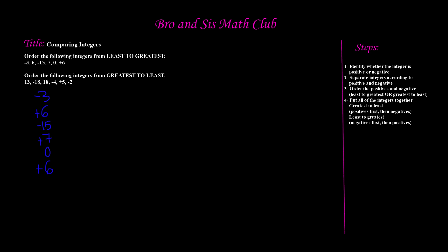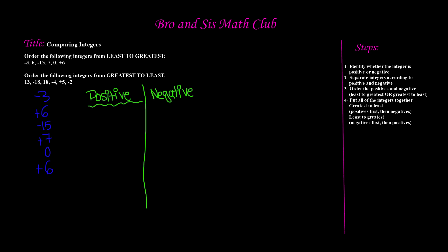Step 2 says: separate the integers according to positive and negative. So we're going to make a chart with positive numbers on one side and negative numbers on the other. Negative 3 is negative because it has a minus sign. Positive 6 is a positive. Minus 15 is negative. Positive 7 is a positive. And 0 — we're going to write this to the side for now because it's not a positive or a negative.